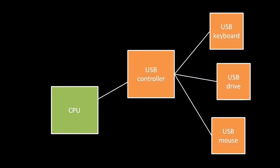In many cases, input-output devices communicate indirectly with the CPU through a controller device. USB devices, for example, talk directly to a chip called the USB controller on your mainboard, which in turn talks directly to the CPU.